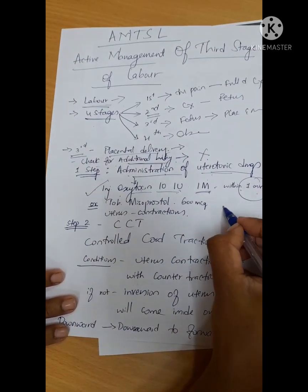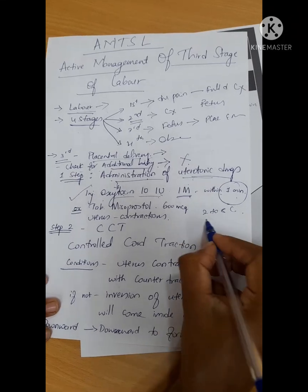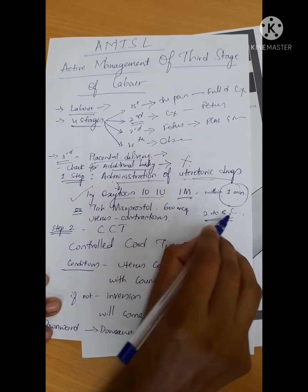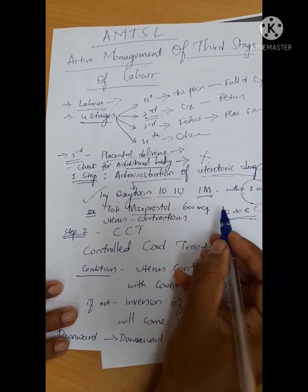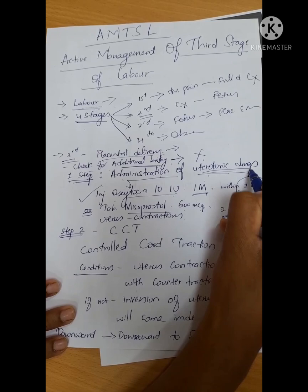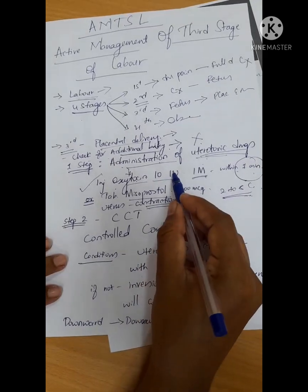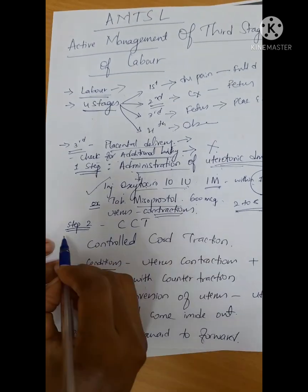Oxytocin storage should be within two to eight degrees Celsius in the refrigerator. If not available, tablet misoprostol 600 to 800 micrograms per oral can be given. So we give uterine tonic drugs to have uterine contractions. Once drugs are given, oxytocin or misoprostol, we should go for step two.